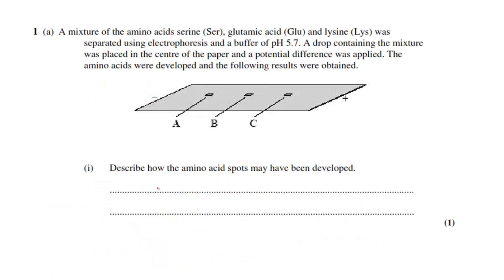The next question is about gel electrophoresis. Part A, part 1 says how the amino acid spots may be developed and that's using an organic dye called ninhydrin.